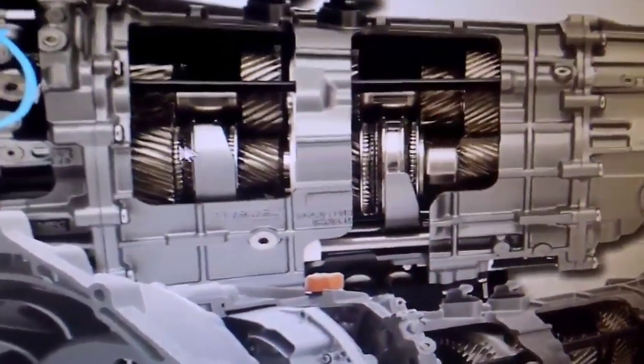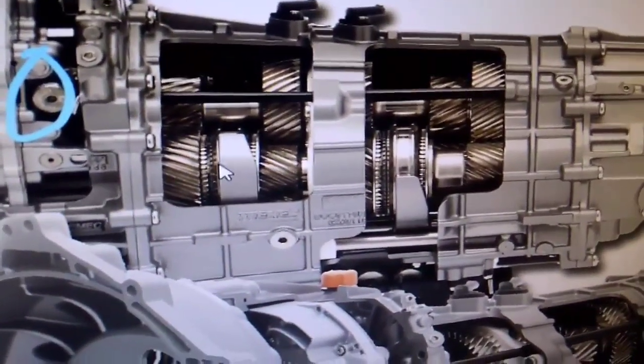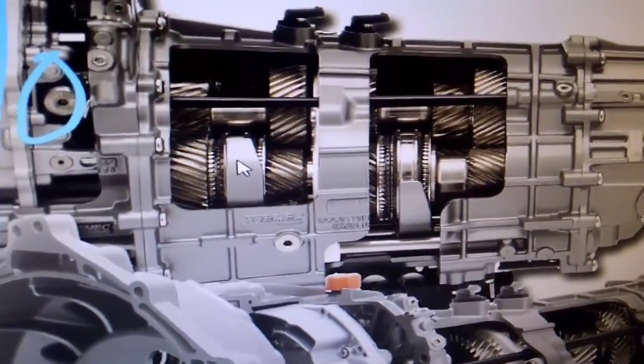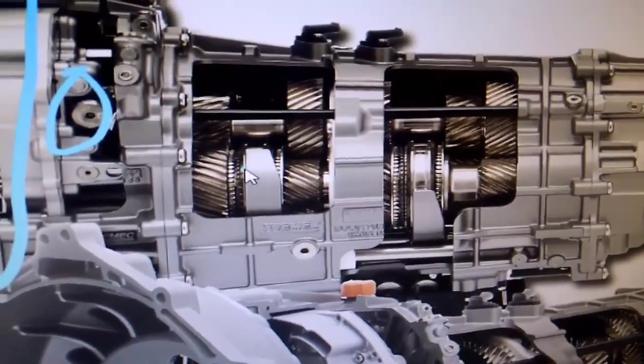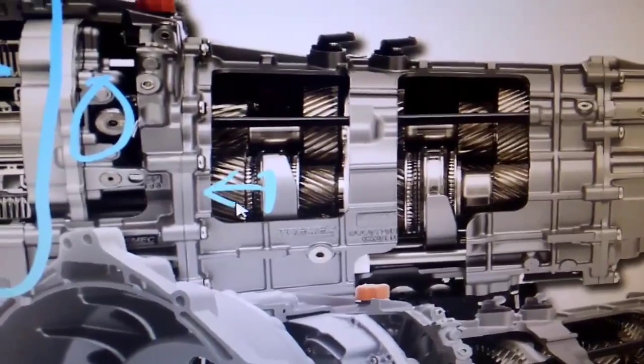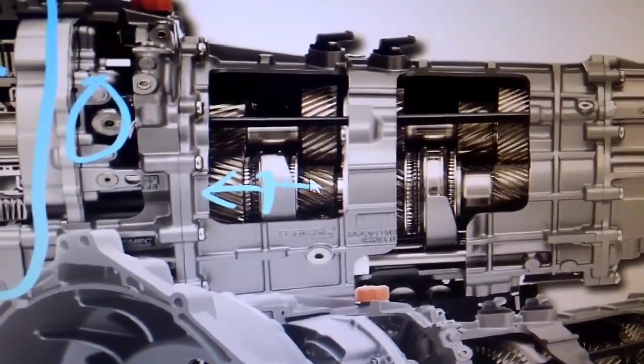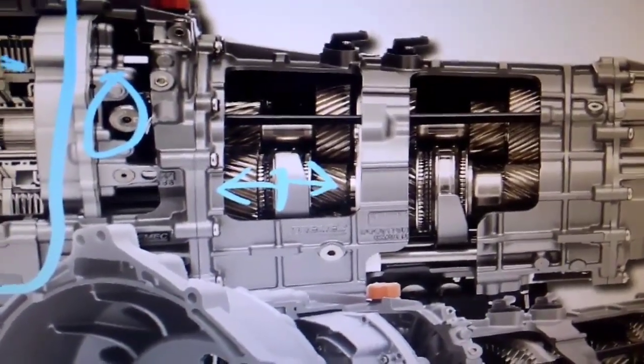Back here, everything looks like a normal manual transmission. Very simple to operate. One synchronizer hub right here. And it will go either this way to engage one gear or this way to engage another gear.